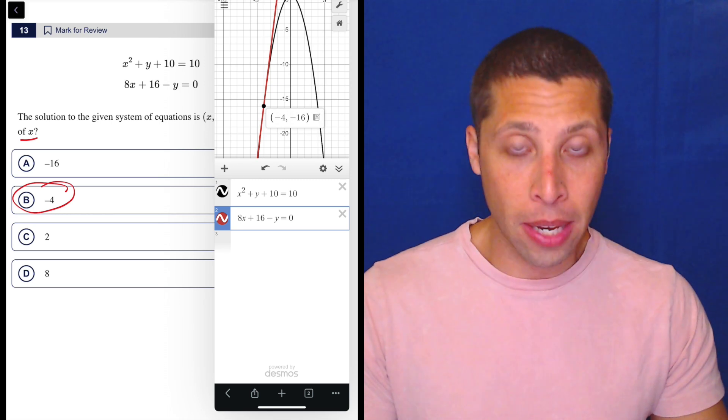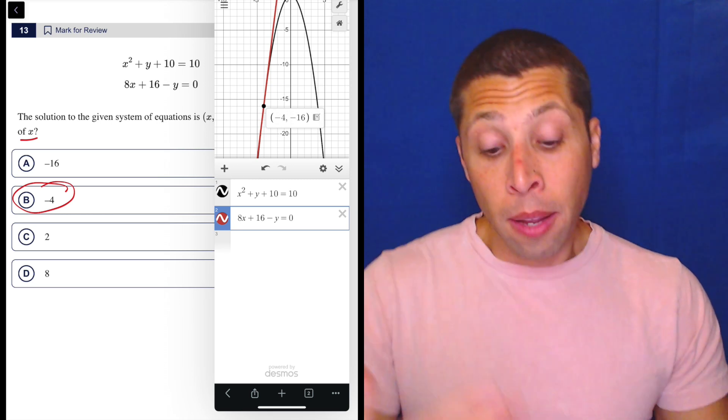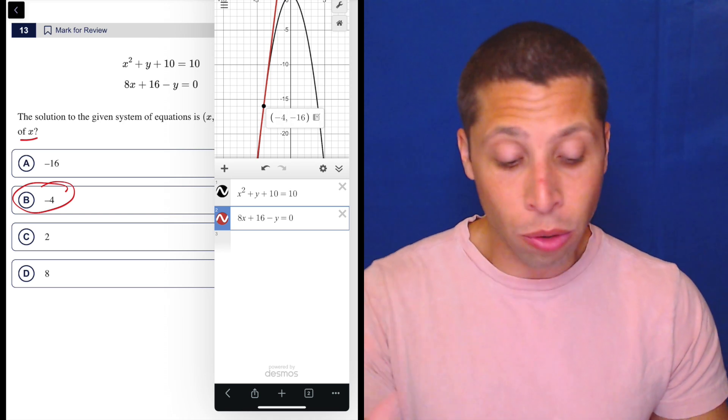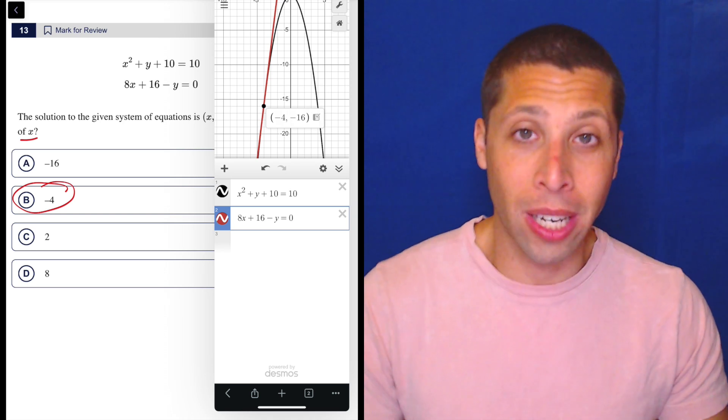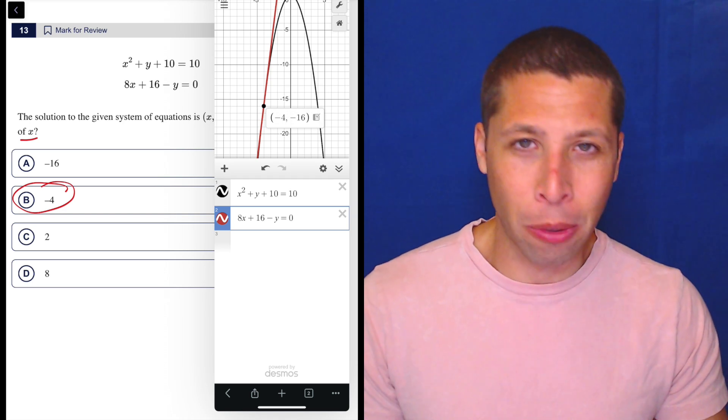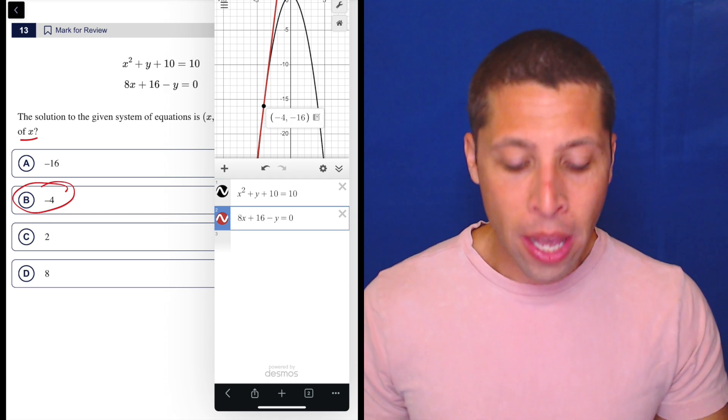Make sure as you're typing it in that you're typing it right. It's very easy to mistype or have the button not register, so be careful and double-check. You don't want to get it wrong for that kind of stupid reason, but you also don't want to get it wrong by doing algebra and making an algebra mistake.